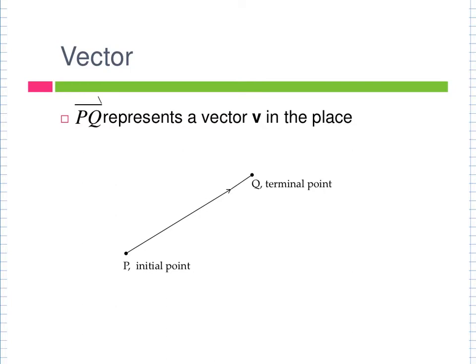There are two characteristics of a vector: direction and length. Direction is kind of like slope — change in x and change in y. Length is obviously the distance from one point to the other. There are two ways to name a vector: one is by its initial and terminal point with a half-arrow on top, so that PQ is vector PQ. The other way is with a single lowercase bolded letter, like vector v.